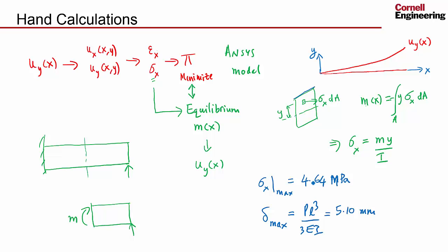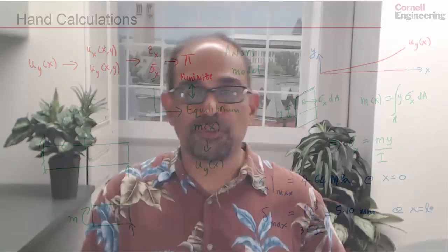So we have some values for the maximum stress. Actually, this maximum stress is going to be at x = 0, and this deflection is going to be at x = L. We have some values to compare with in ANSYS, and we'll do that when we get the results in ANSYS. Let's move on to solving the problem in ANSYS.